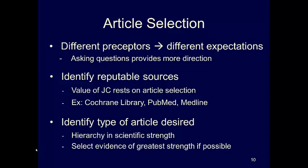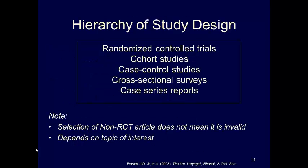You definitely want to stay away from resources such as Wikipedia. It is also important to identify the type of article desired. A hierarchy of scientific strength does exist, and it is possibly a good idea to select the evidence of greatest strength whenever possible. Here is the hierarchy of study design strength. Please note that the selection of a non-randomized controlled clinical trial article does not mean it is invalid, and it depends on the topic of interest. Remember that your preceptor may have his or her own preferences, so keep that in mind.